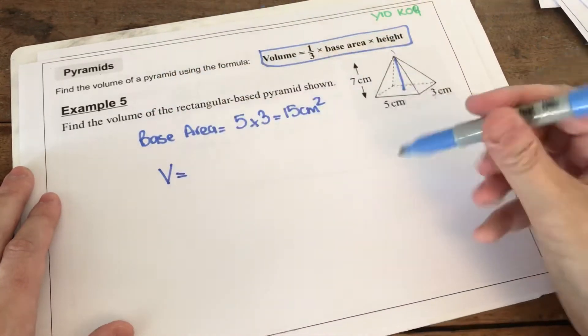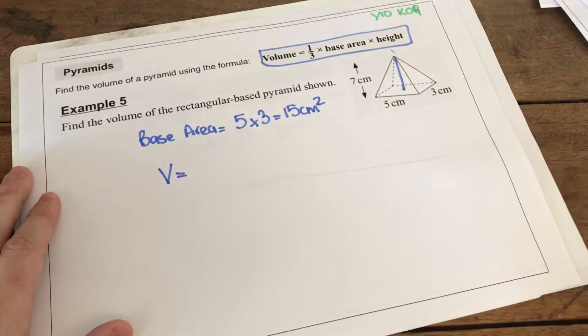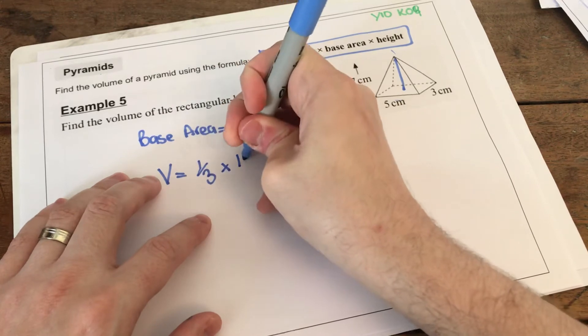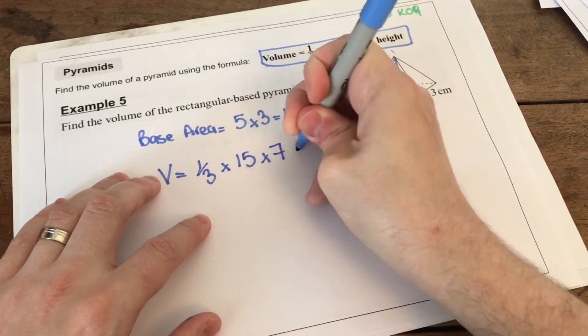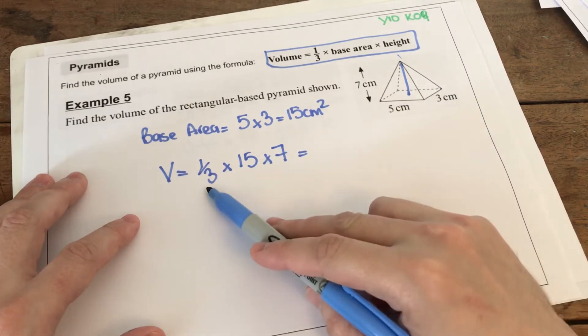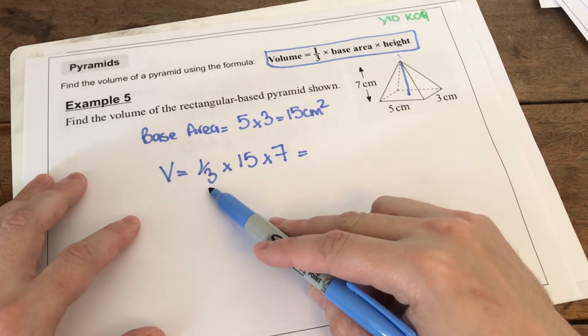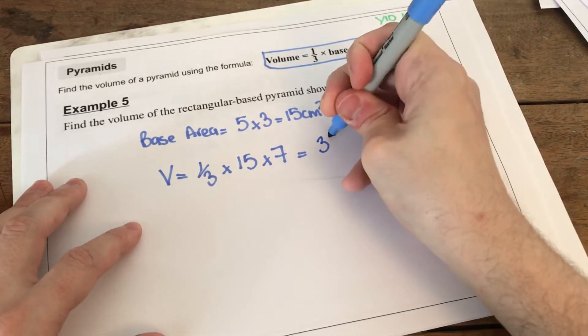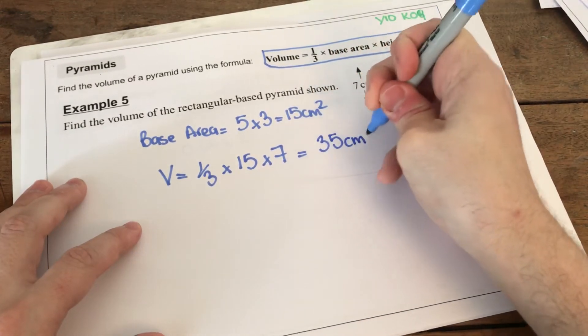To work out volume, all I have to do is put it into that formula. So we do one-third times 15 times 7. 15 times 7 we can do and then we can divide that by 3 on our calculator instead of multiplying by one-third if you want. But what comes out is 35 cm cubed.